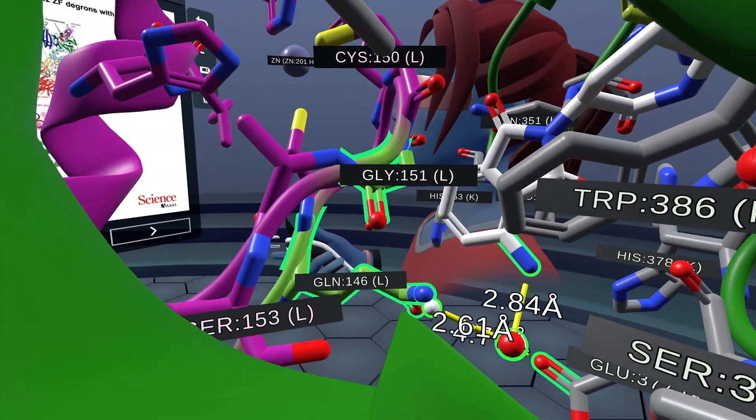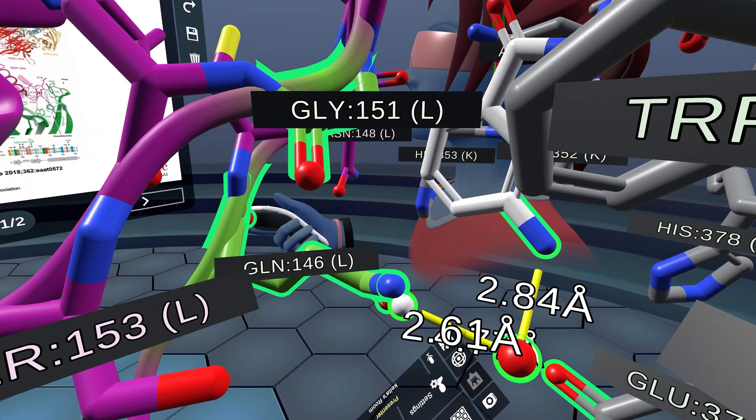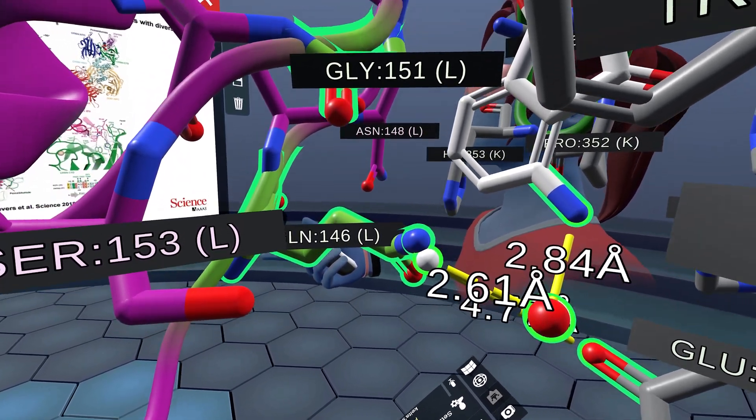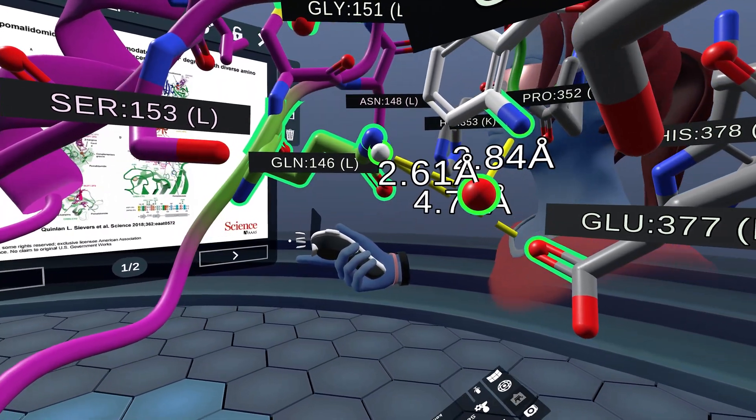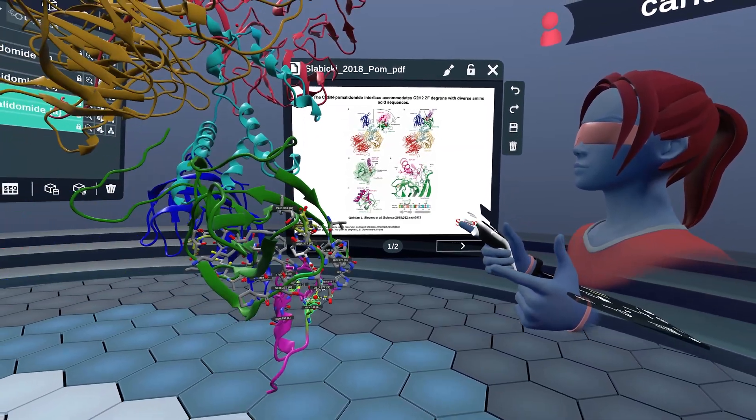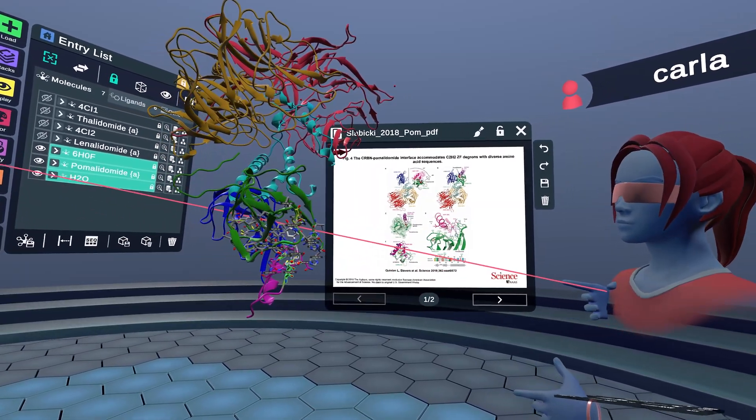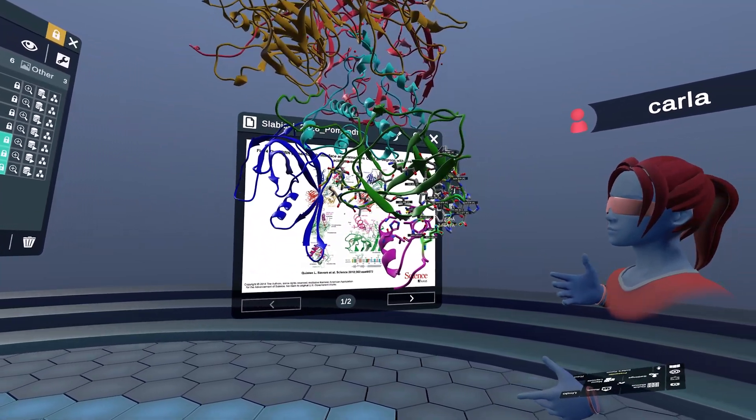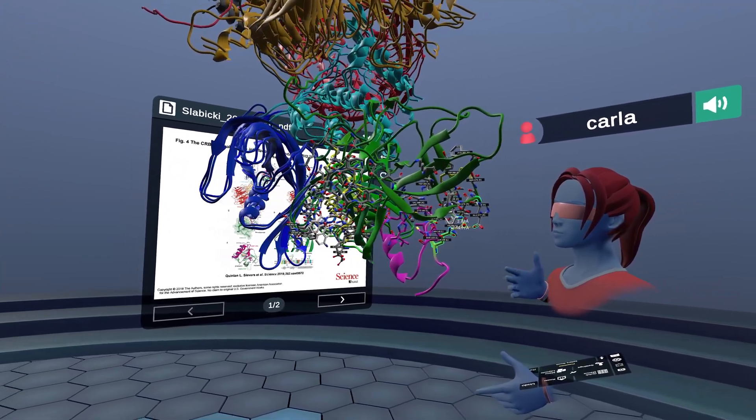In contrast to the structures of thalidomide and lenalidomide with cereblon unassociated with a target substrate, the molecular glue structure of pomalidomide sandwiched between cereblon and IKZF1 zinc finger 2 is in an open conformation with its N- and C-terminal domains separated and stabilized by crystal contacts. Let's move this back into a smaller orientation. You can see that the N-terminal region and the C-terminal region are separated.